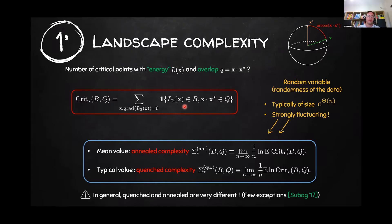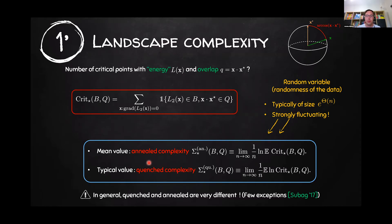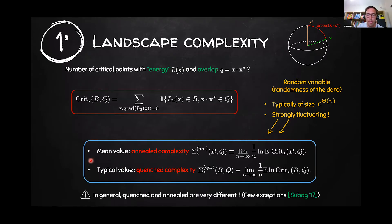I define the annealed complexity as the limit of the log of the expectation of the number of critical points. But since this variable is typically of exponential size, the most interesting value is the quenched complexity, which is the limit of the expectation of the log. In general these two quantities are very different. The annealed one is easier to compute and gives bounds on the quenched complexity, but the real typical value is given by the quenched one.